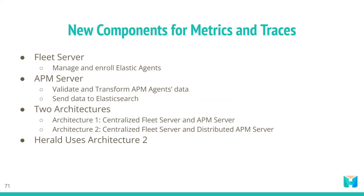The third component is the Fleet Server, which provides a centralized way to manage the Elastic Agents. The fourth component is the APM Server, whose function is to validate the data that the APM agents are sending to it and then transform that data into Elasticsearch documents before sending it to Elasticsearch.